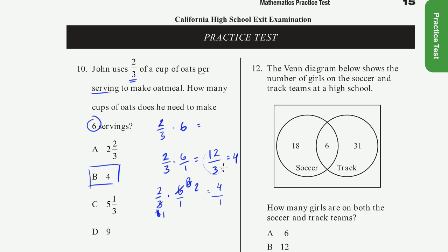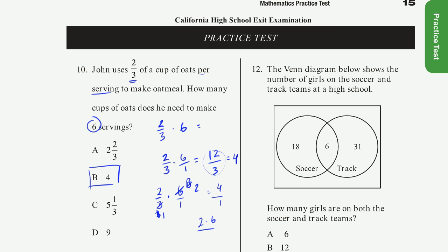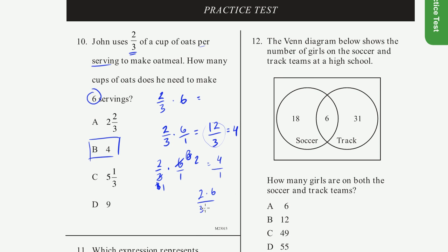This thing right here, instead of solving it up here, I could have rewritten it as 2 times 6 over 3 times 1. And then you could simplify it before getting to this stage, where you could just divide the 6 by the 3, and you get a 1 and a 2. 6 divided by 3 is 2, and you get 4.